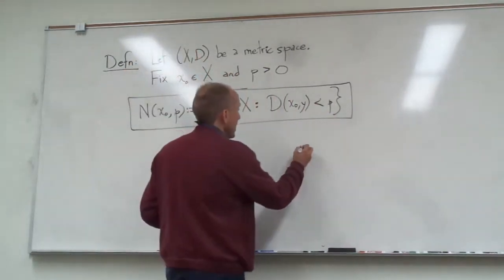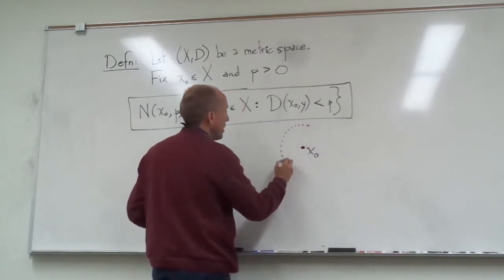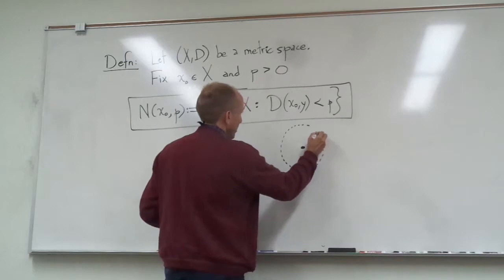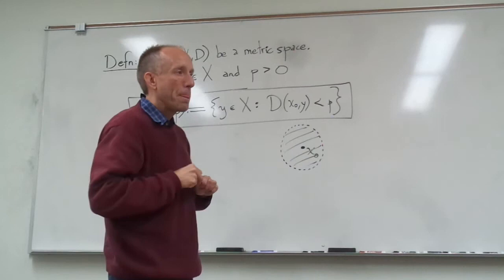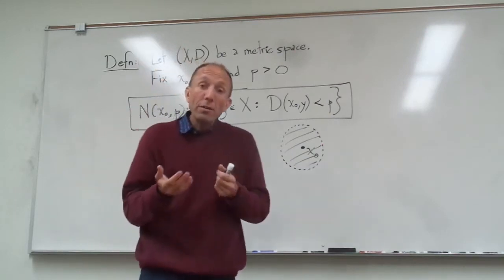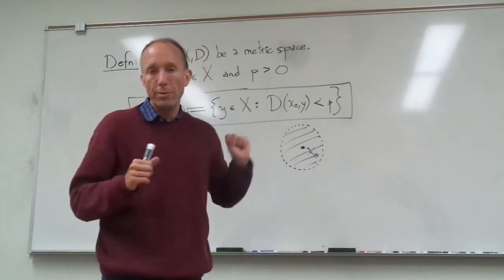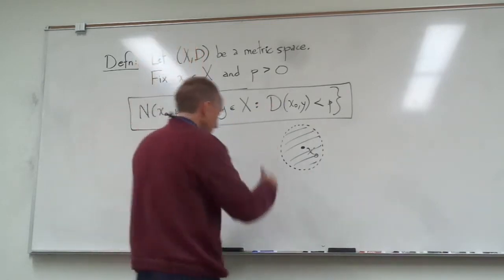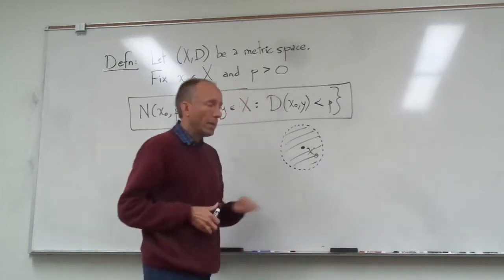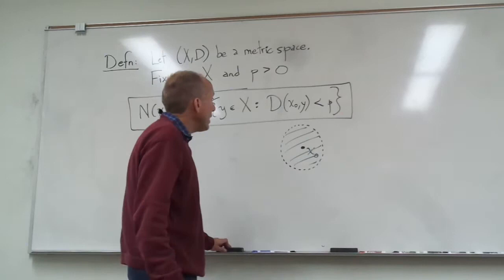The classic example using the Pythagorean metric in the plane, two dimensions, would just be a disk of any particular radius centered at this point x naught. But depending on what the metric is, the shape of these neighborhoods can vary. So it doesn't always have to be exactly what you think of in this classic picture here.